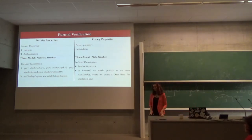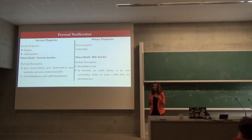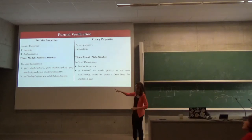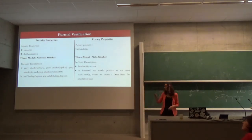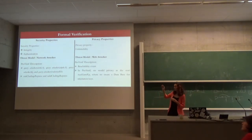For our protocol, we have two categories of properties: security properties and privacy properties. For security, we verify authentication and integrity. In our threat model, the attacker is a network attacker — it can block messages, inject messages, and read messages. For integrity, we use attacker queries to verify all messages between the server and the user. For authentication, we define two events: sendChallengeResponse in the user process and validChallengeResponse in the server process. When authentication holds, it means that for all runs of the protocol, the sendChallengeResponse event directly triggers validChallengeResponse. If any run shows the first event does not directly trigger the second, or the message was changed, authentication does not hold.